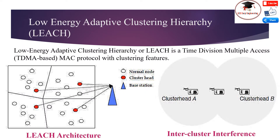Low Energy Adaptive Clustering Hierarchy is a time division multiple access MAC protocol with clustering features. A network is formed as a star topology in two hierarchical levels, as shown in the figure. A cluster consists of one cluster head and a number of ordinary nodes, and all ordinary nodes communicate with the cluster head directly. There is a single base station which communicates with all the cluster heads.